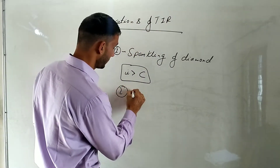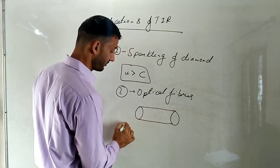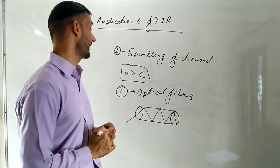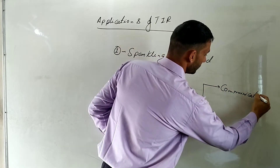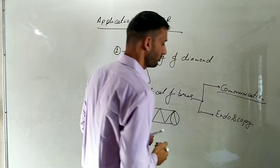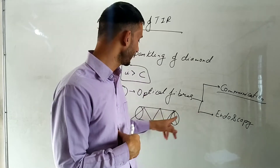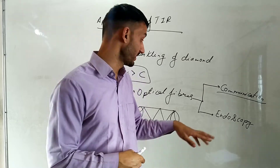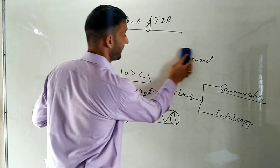The second application is optical fiber. Optical fibers are cables through which light moves and keeps on reflecting back without coming out — again following the condition that angle of incidence is greater than critical angle. Optical fiber is used for two purposes: one is communication, and the second is endoscopy. Endoscopy is a process in which doctors examine the internal organs of the body using optical fiber — they put it through the mouth of a patient and examine internal organs on a screen. These two are the very important applications of TIR: sparkling of diamonds and optical fibers.